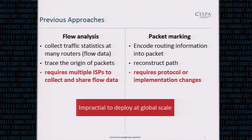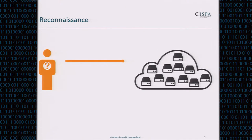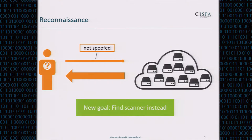We thought maybe we can take a step back and look from the outside. How does the attacker actually know which servers to use to launch the attack? Clearly someone at some point must have found out. A scanner sends requests to multiple machines and records back the replies. Crucially, during scanning you cannot spoof your source address because you're interested in receiving the reply. So why not try to find the scanner first?